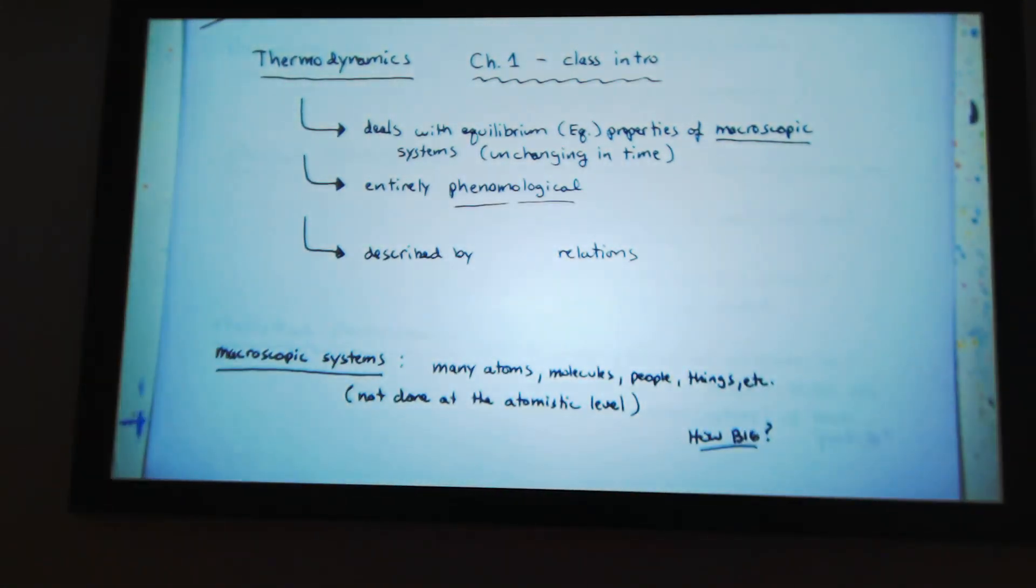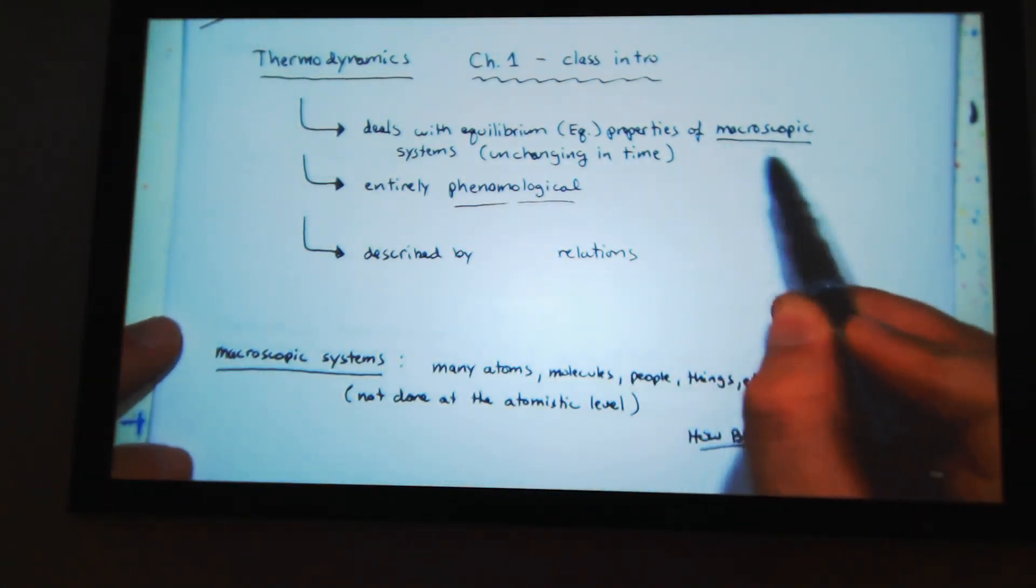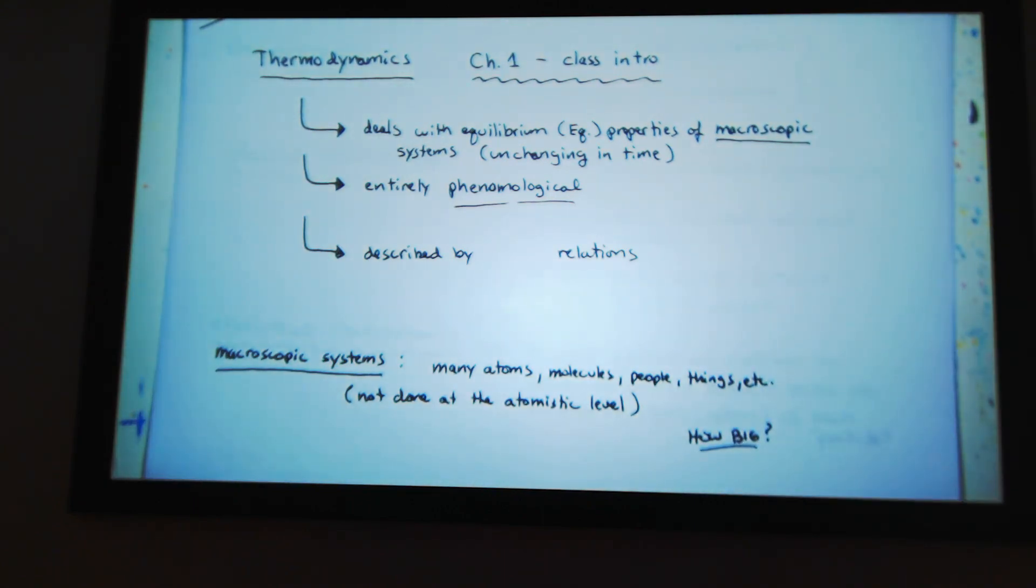It deals with equilibrium properties of macroscopic systems. So what is a macroscopic system? How big? Can I consider this classroom macroscopic? If I take my hair on my head, can I consider that hair macroscopic? If I take a segment of my hair, can I consider that macroscopic? If I keep on chopping it down, when can I no longer say it's macroscopic? You can use Avogadro's number as kind of a rule of thumb to find your system macroscopic. You need probably Avogadro's number of molecules or things within.